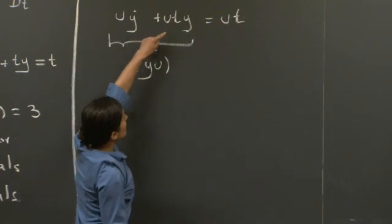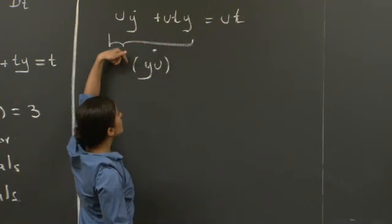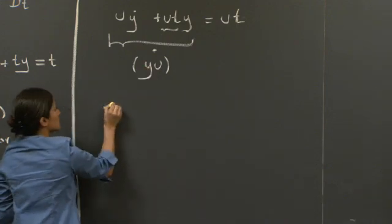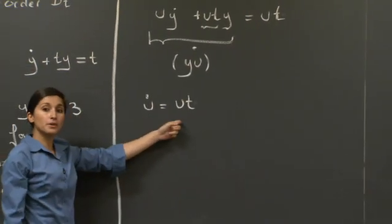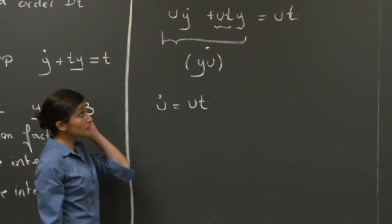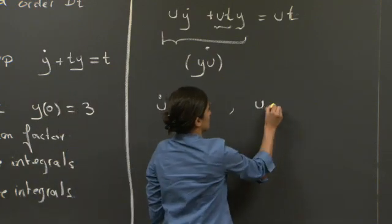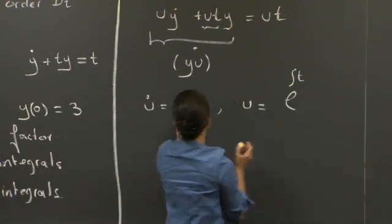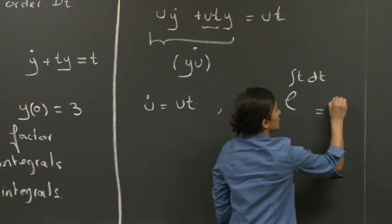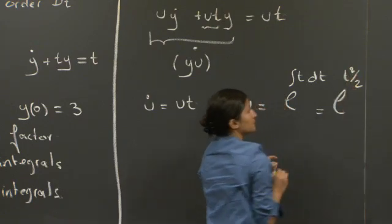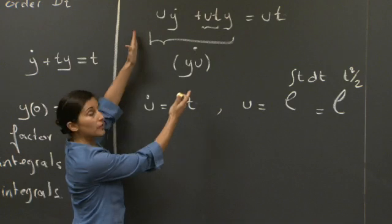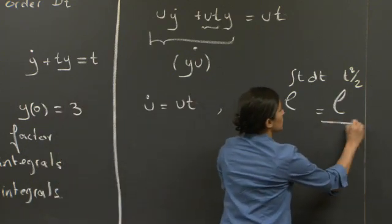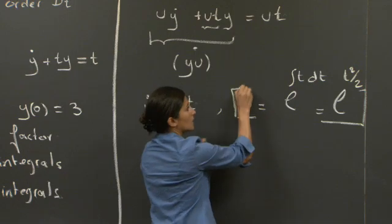To identify the function u that gives us this form, we need to recognize the structure of the equation. From previous sessions, we saw that this gives us a classical solution involving an exponential of the integral of the coefficient, which gives us e^(t²/2). So the integrating factor is u = e^(t²/2).